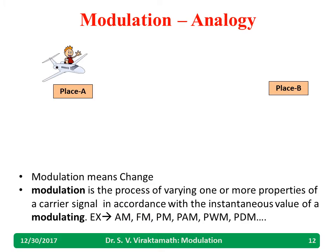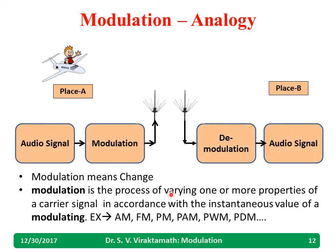Modulation means change. Modulation is a process of varying one or more parameters of a carrier signal in accordance with the instantaneous value of the modulating signal. For example, amplitude modulation means you are changing the amplitude. Frequency modulation means you are changing the frequency. Phase modulation — changing the phase. Pulse amplitude modulation — changing the pulse amplitude. Similarly, pulse width modulation and pulse duration modulation. In general, modulation means change.